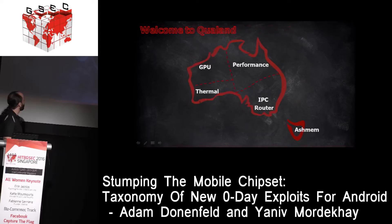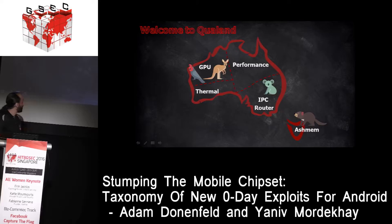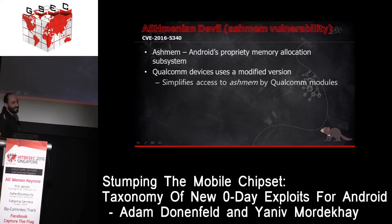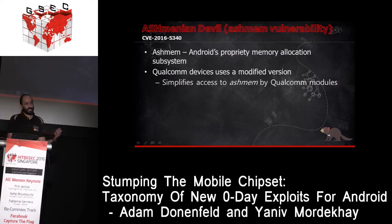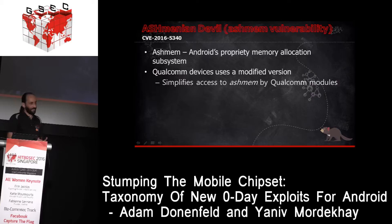Now for the fun part — welcome to our Qualaland. We'll start with a vulnerability called Ashmanian Devil, a vulnerability in the Ashman module. Ashman is a standard module in Android — it was developed by Google to improve memory management in the Android system, similar in a way to regular shared memory in Linux. It's basically a file-based API that works using file descriptors.